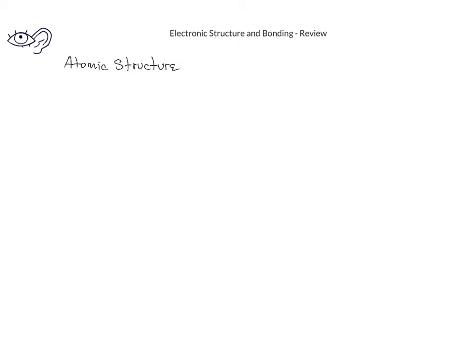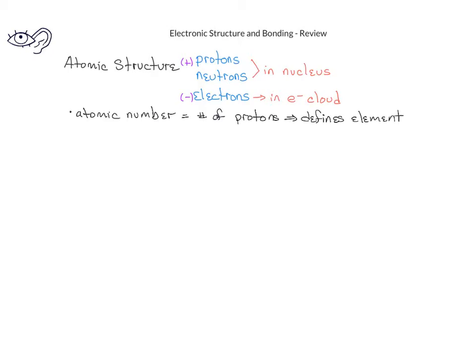You should be familiar with the basic concepts of atomic structure. Specifically, you should recall that protons and neutrons are in the nucleus, while the electrons are found outside the nucleus in the electron cloud. In addition, you should recall that protons have a positive charge and electrons have a negative charge. You should also recall that the atomic number is the number of protons in an atom, and it defines what the element is. This is different from the mass number, which is the sum of the total number of protons and neutrons in the nucleus.